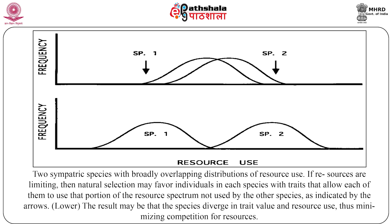The figure shows two sympatric species with mostly overlapping distribution of resource use. If resources are restricted, natural selection may favor individuals in each species with traits allowing each to use that portion of the resource spectrum not used by the other species. The result may be that the species diverge in trait value and resource use, thus reducing competition for resources.